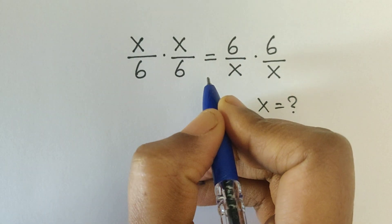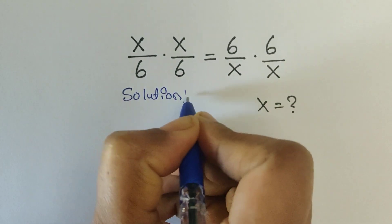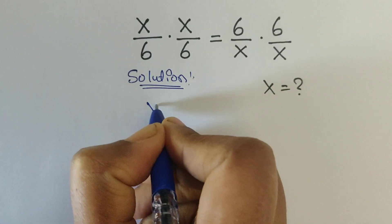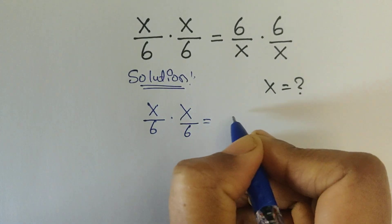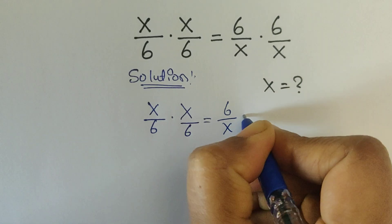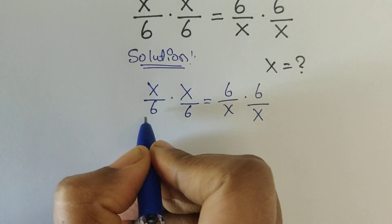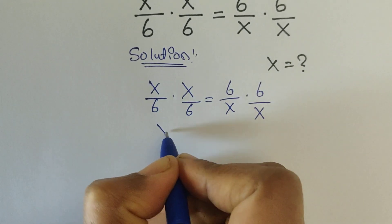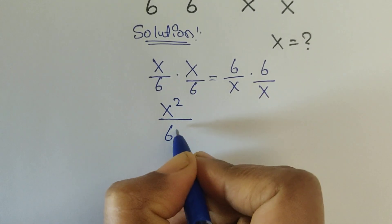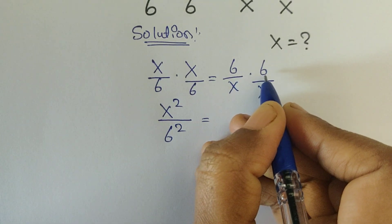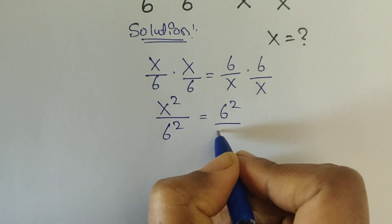So here we have given x by 6 times x by 6 equals 6 by x times 6 by x. Now multiply these two terms: x times x equals x squared, divided by 6 times 6 which equals 6 squared, equals 6 times 6 which is 6 squared divided by x times x which is x squared.